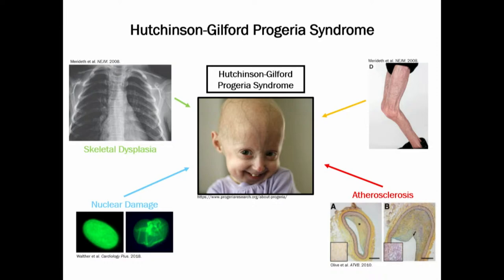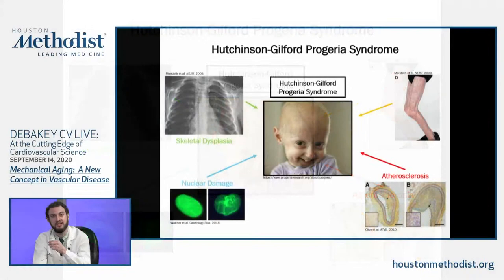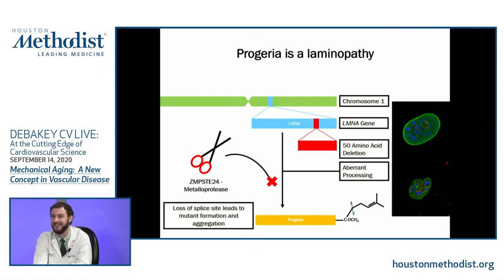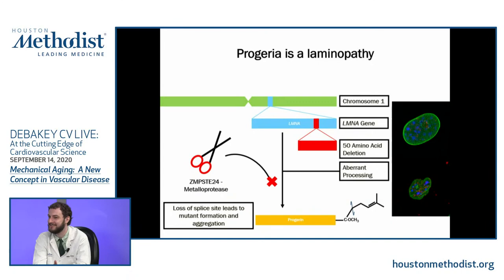How do you accelerate senescence in a cell? How it happens in progeria is very interesting, and this process can also occur in normal cells. Progeria is a genetic disease caused by a mutation of lamin A. Lamin A is an important structural protein of the nucleus for many cells in the body — specifically cells in the mesenchyme, which importantly includes blood vessels. So you see the disease burden very significantly in the blood vessels.